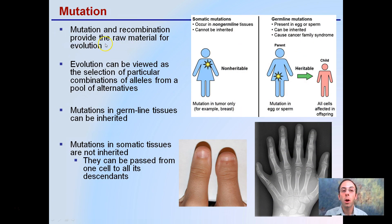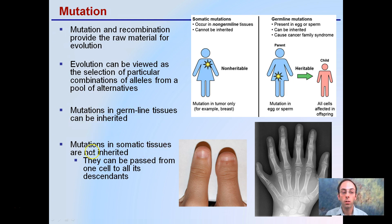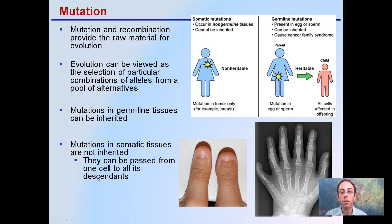Mutation and recombination provide raw material for evolution, so this can be beneficial. Evolution can be viewed as a selection of particular combinations of alleles from a pool of alternatives. Mutations in germline tissue can be inherited, while mutations in somatic tissues are not. Our somatic cells are our regular body cells; germline cells would be sperm or egg cells. Somatic tissue mutations can't be passed on — they're going to affect the individual potentially, but not any of their offspring.